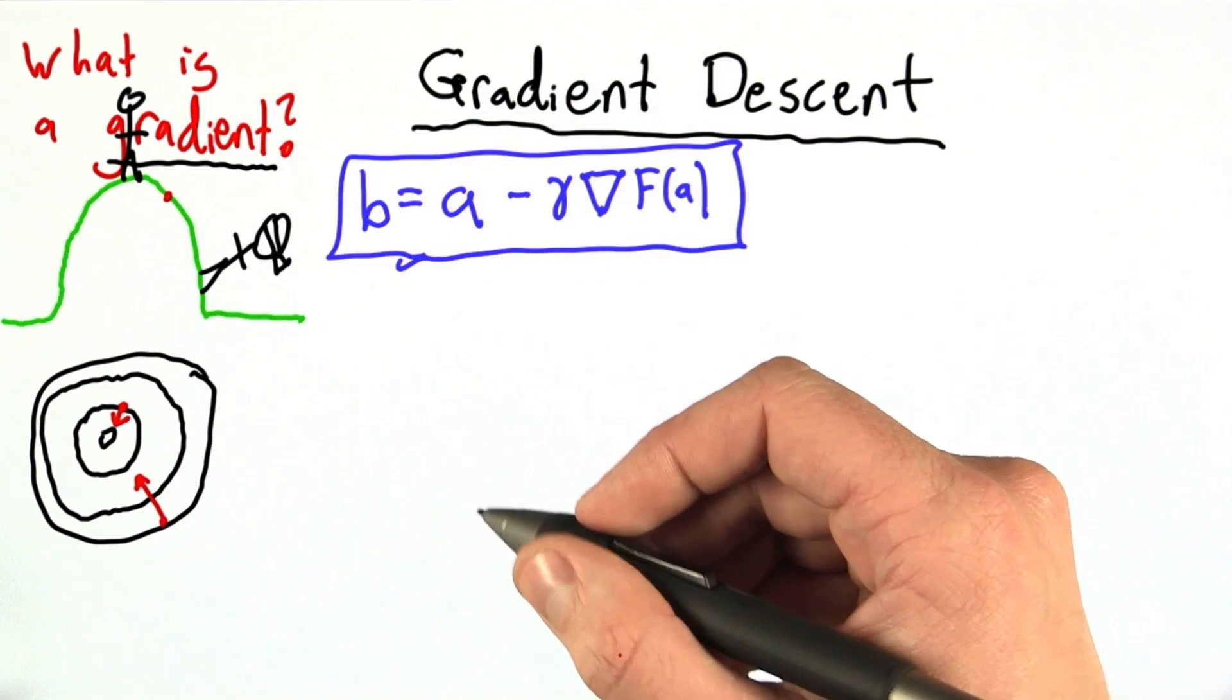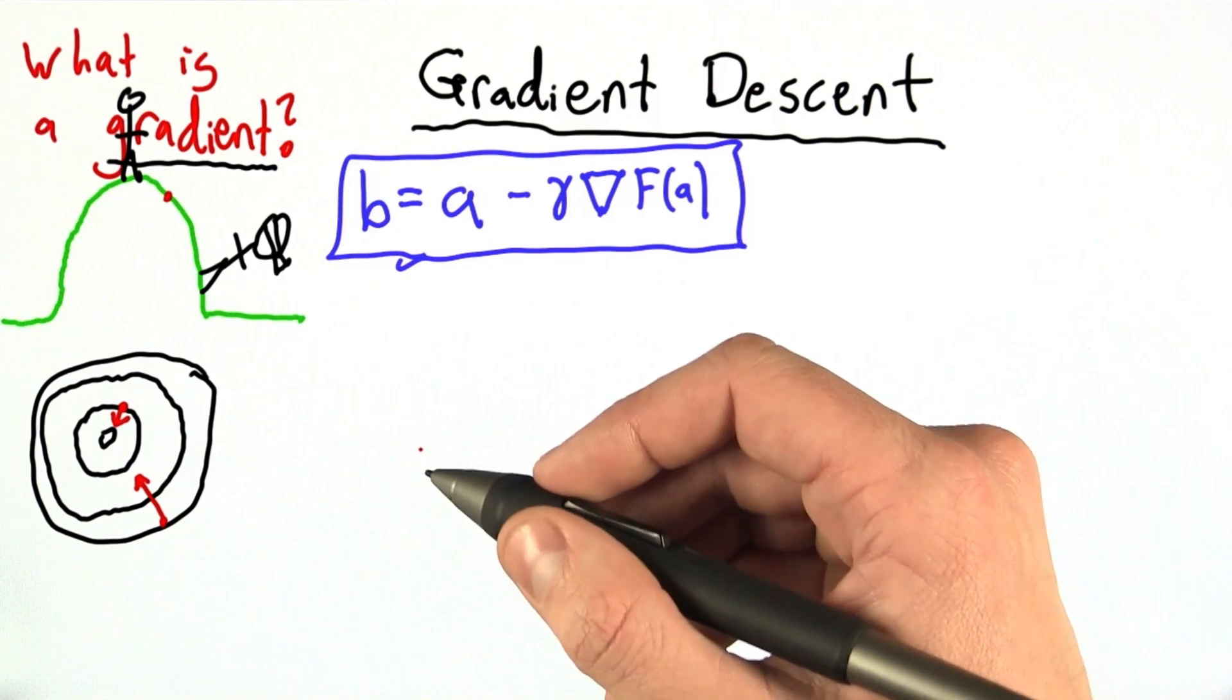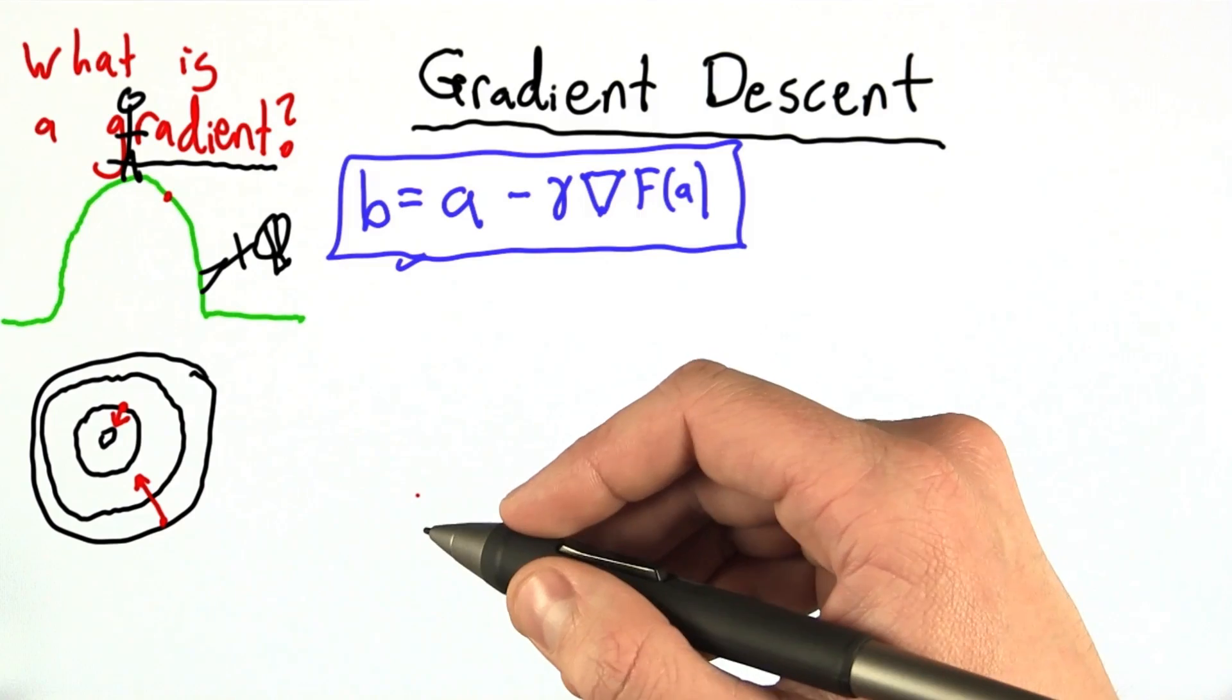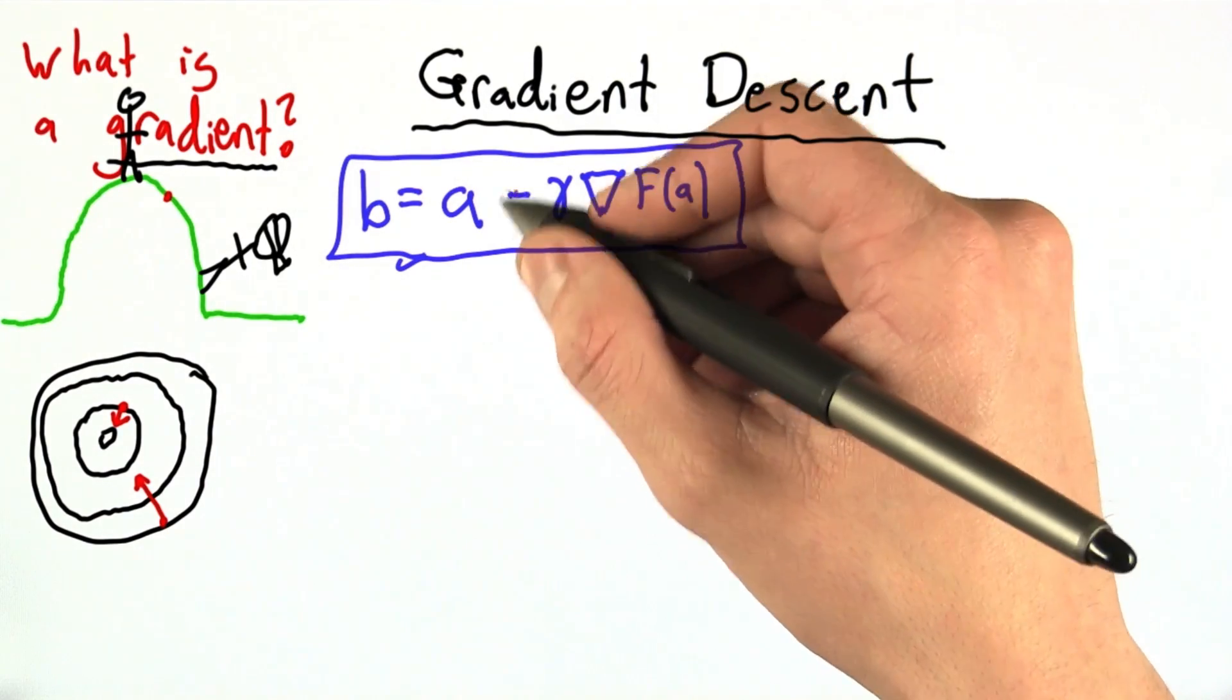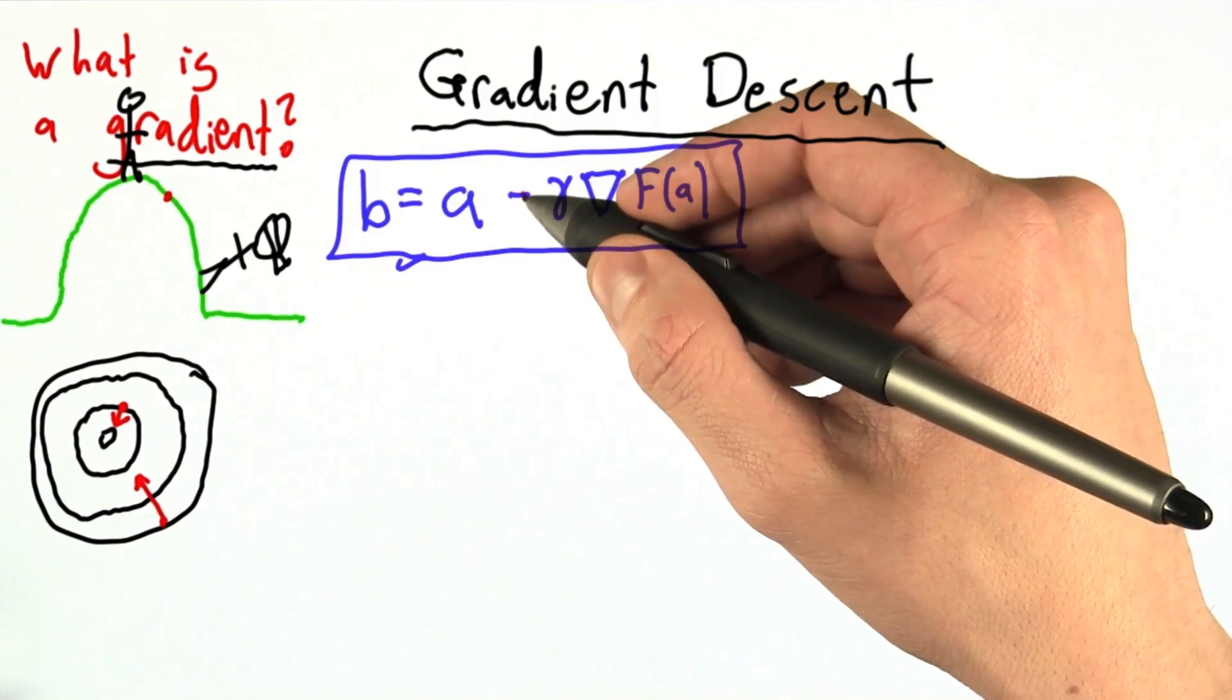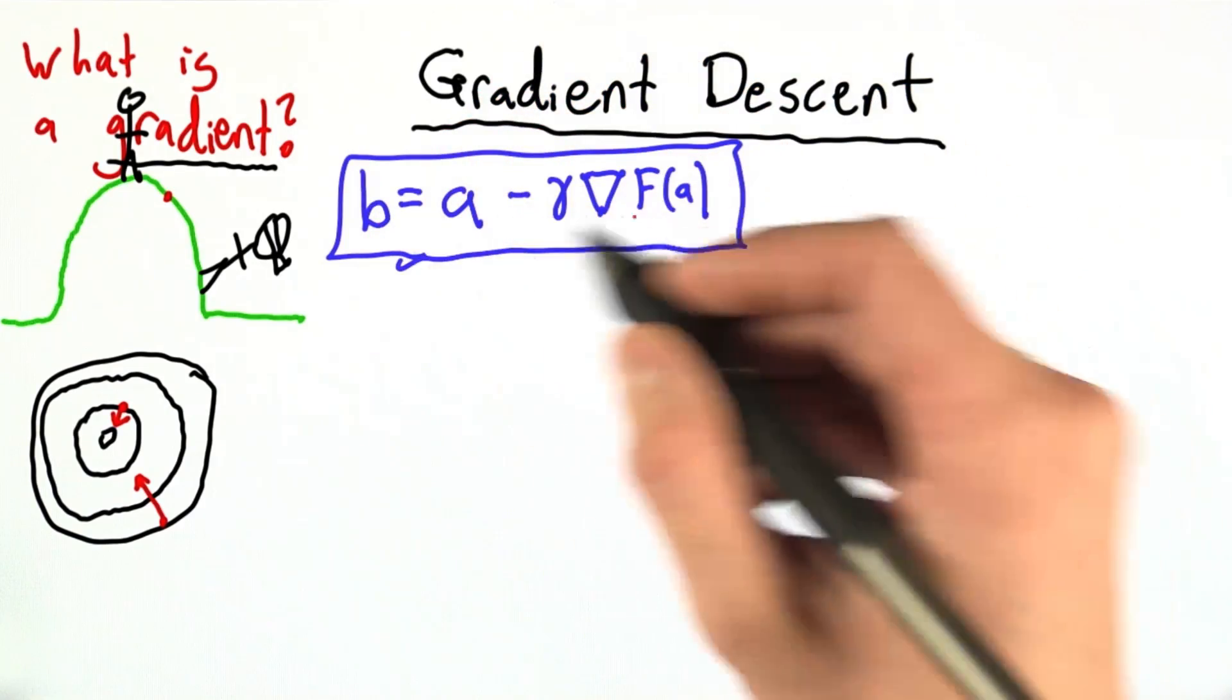Gradient descent is very similar to blindfolded hill climbing. Now instead of climbing up a hill, we're climbing into a valley and trying to find the bottom of it because we want to minimize a function. That minimization is encoded in this minus sign, so instead of adding the gradient, we're going to subtract it. And let's talk about what each of these variables mean.